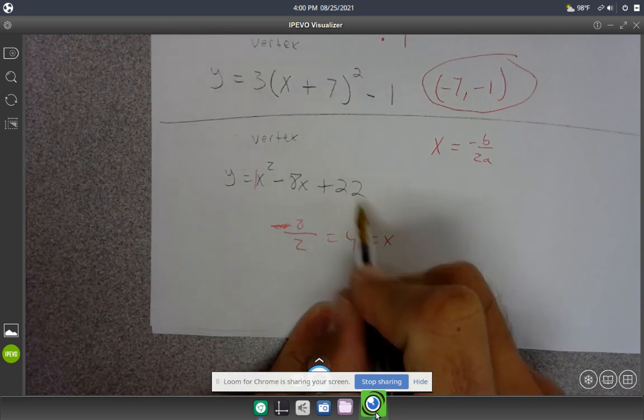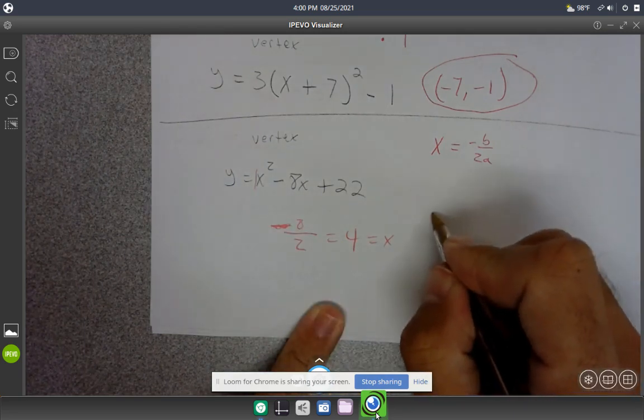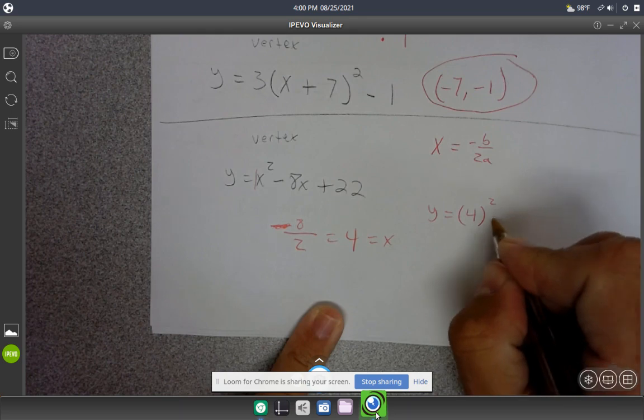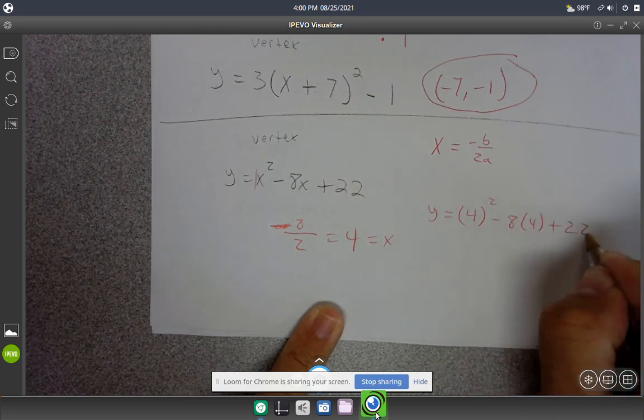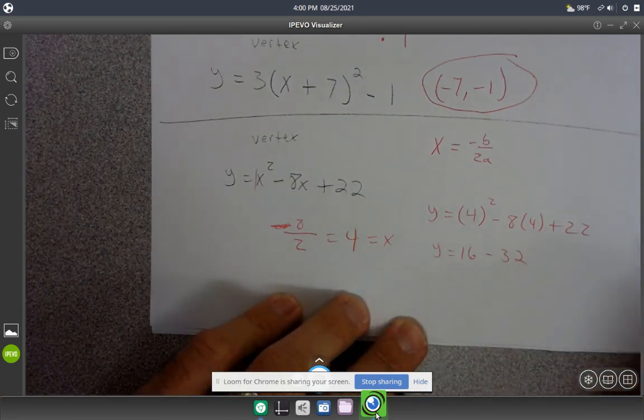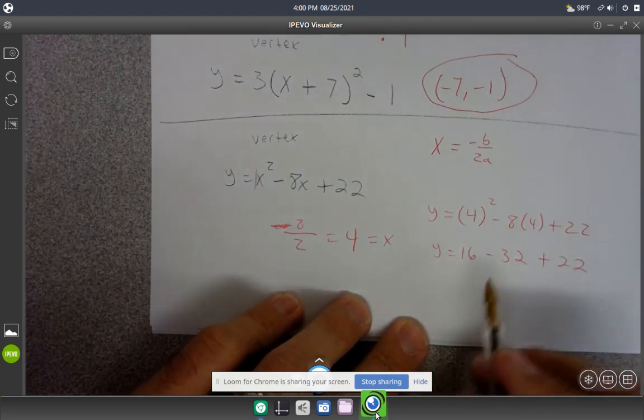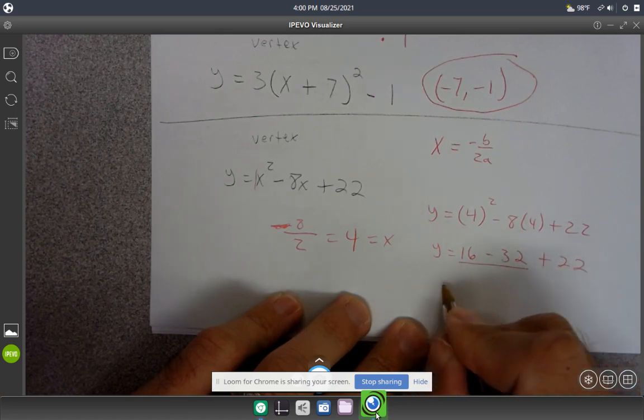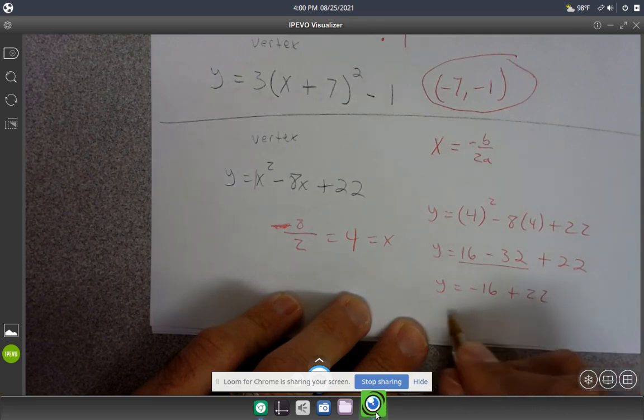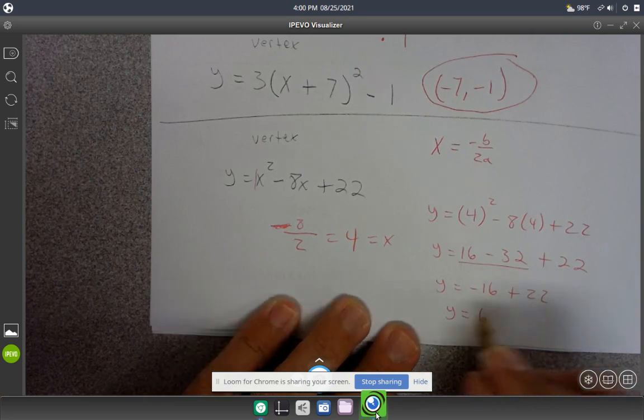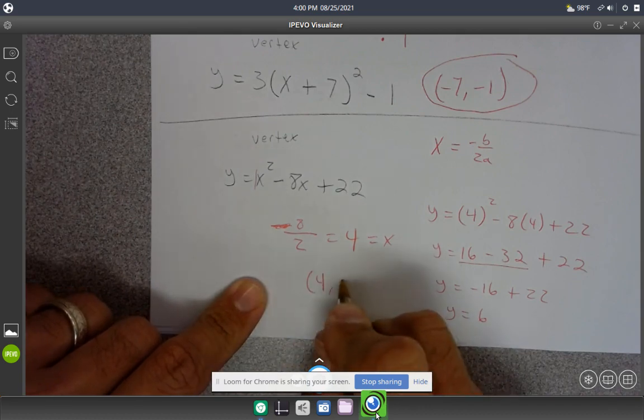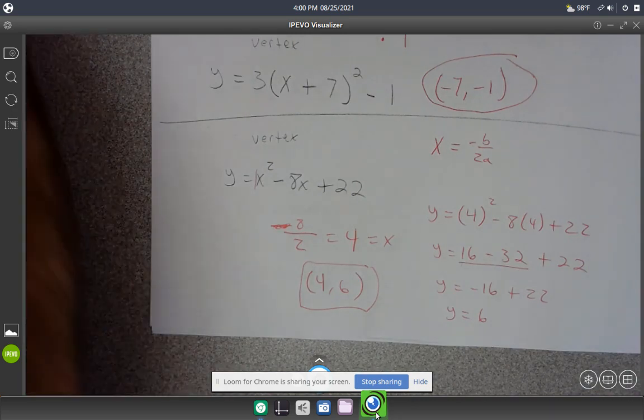To find the y coordinate, plug x back in. So y equals 4 squared minus 8 times 4 plus 22. That's 16 minus 32 plus 22. 16 minus 32 equals -16, and -16 plus 22 equals 6. So the vertex is at (4, 6).